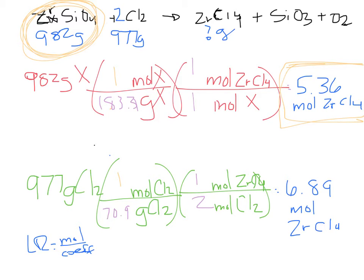Please don't say the LR is that 5.36 — that's just what we're producing. But how do I know it comes from the limiting reactant? Because it produced the least. What's weird is the limiting reactant — we actually had more of it in the beginning: 982 grams versus 977 grams. So can you assume that Cl₂ is going to be the limiting reactant just because it's less? No, you can't.